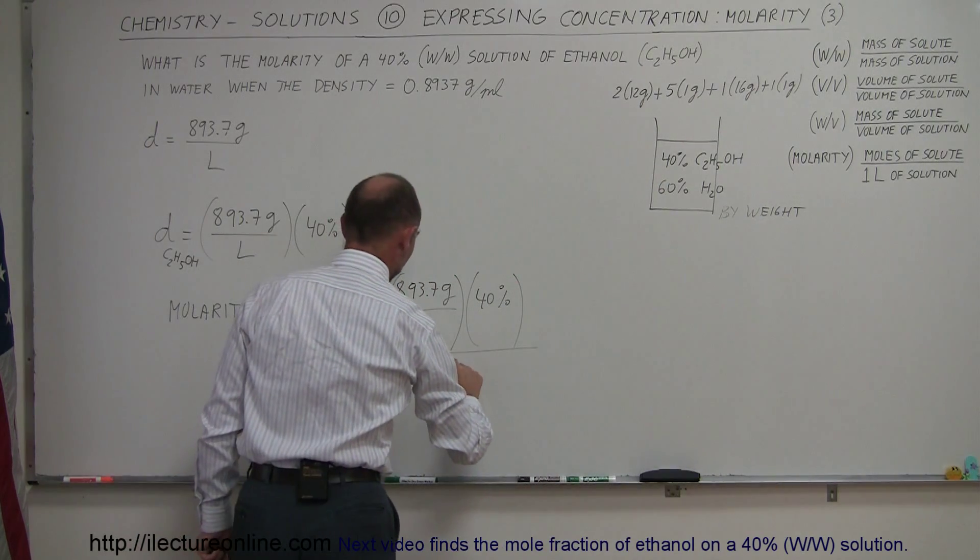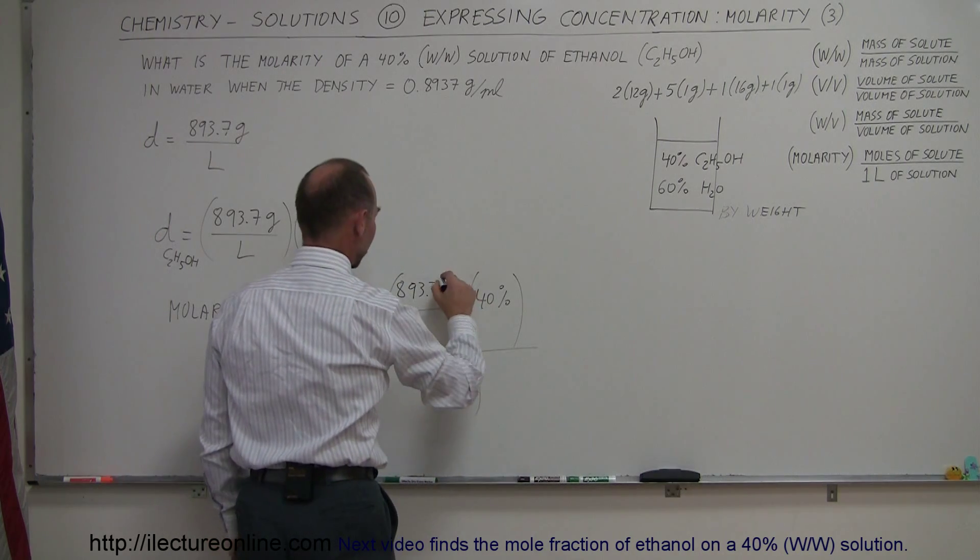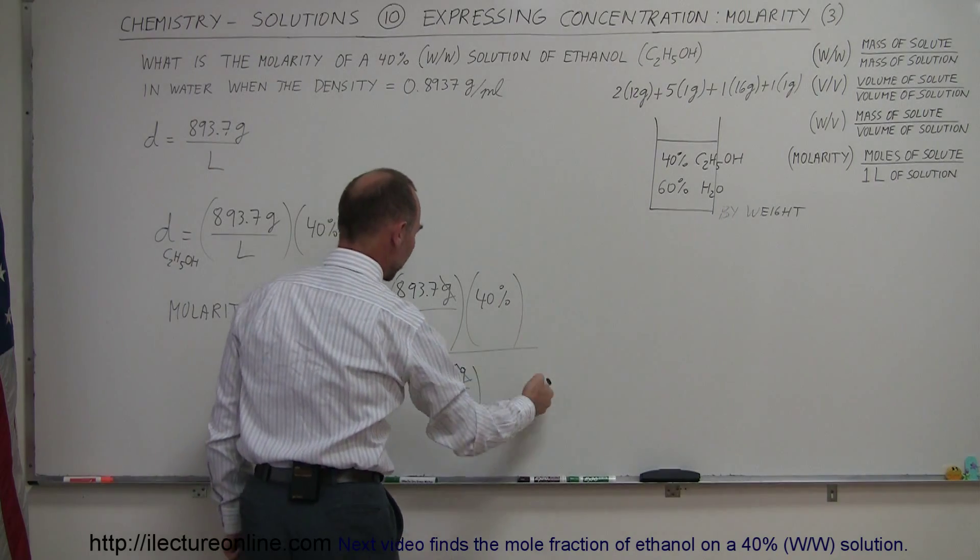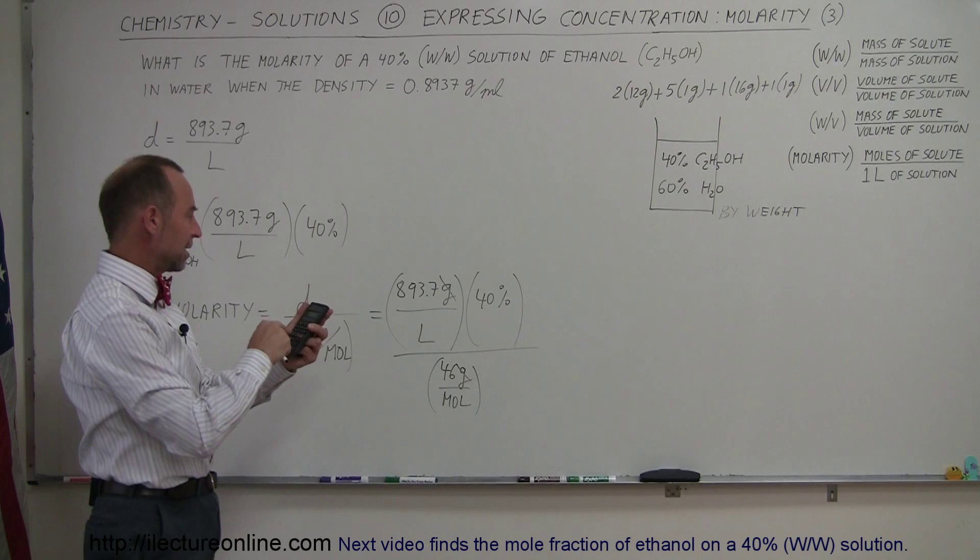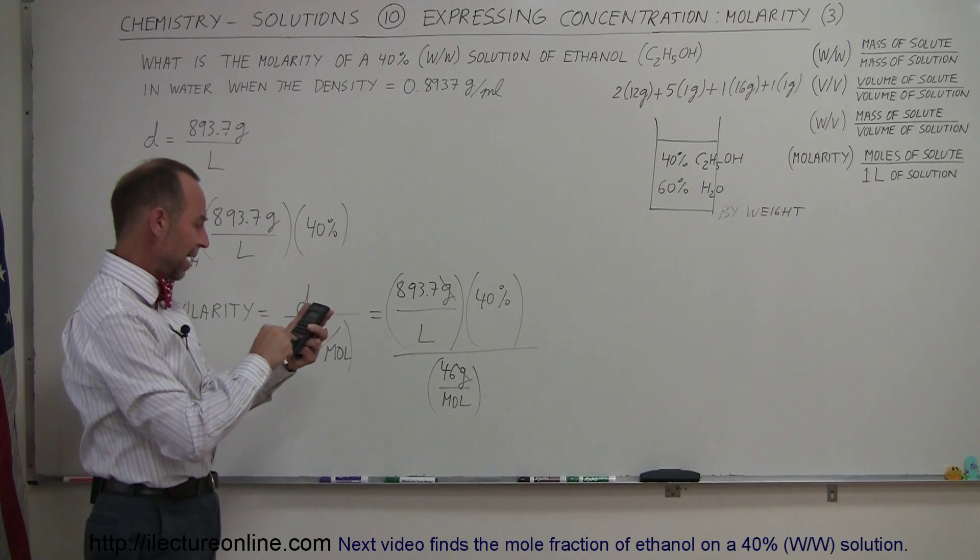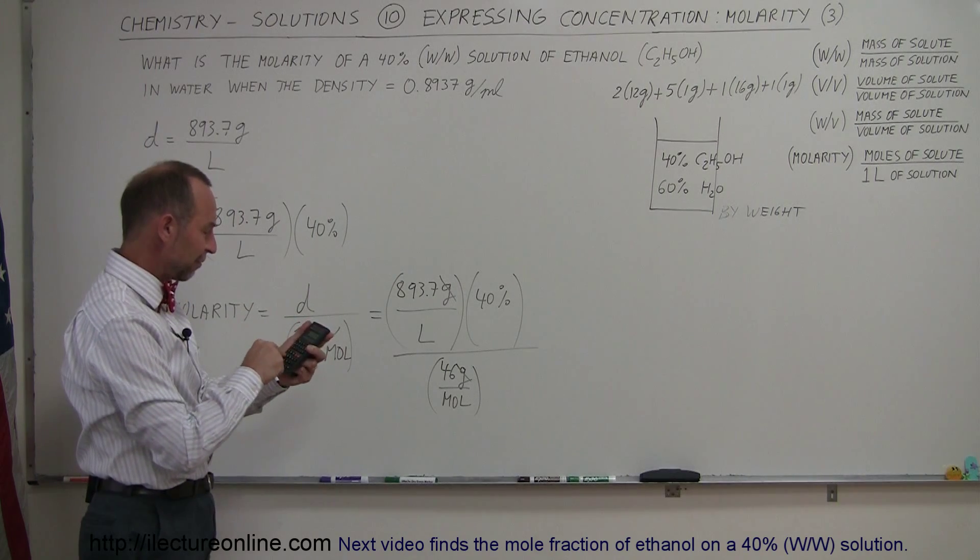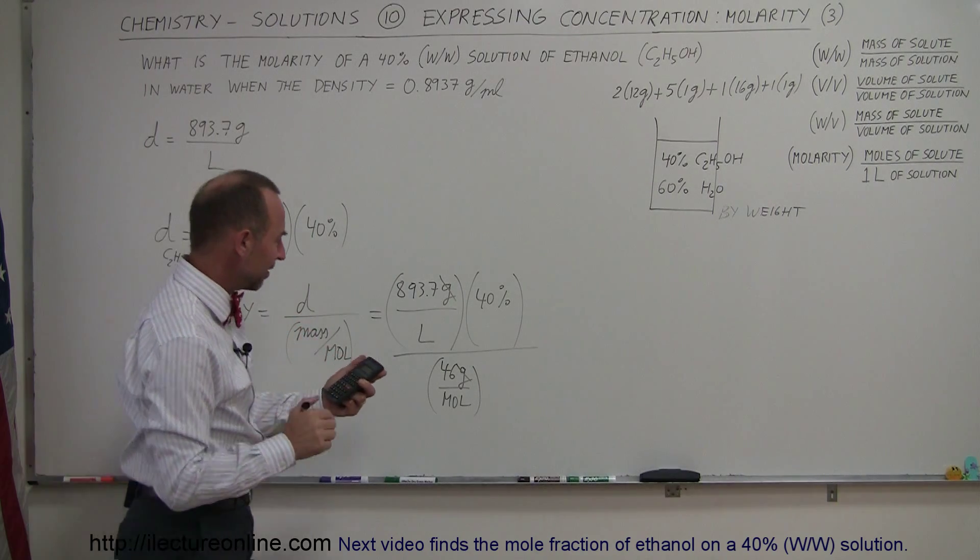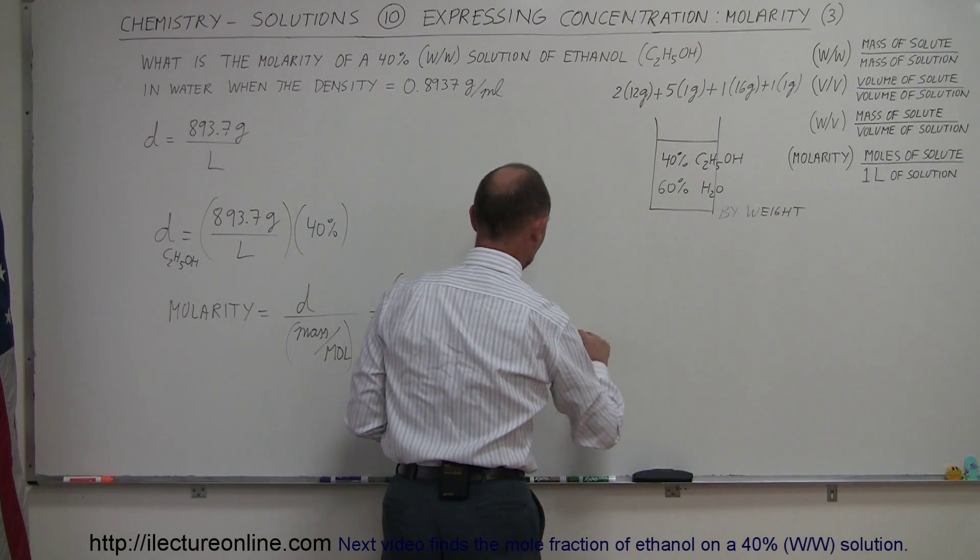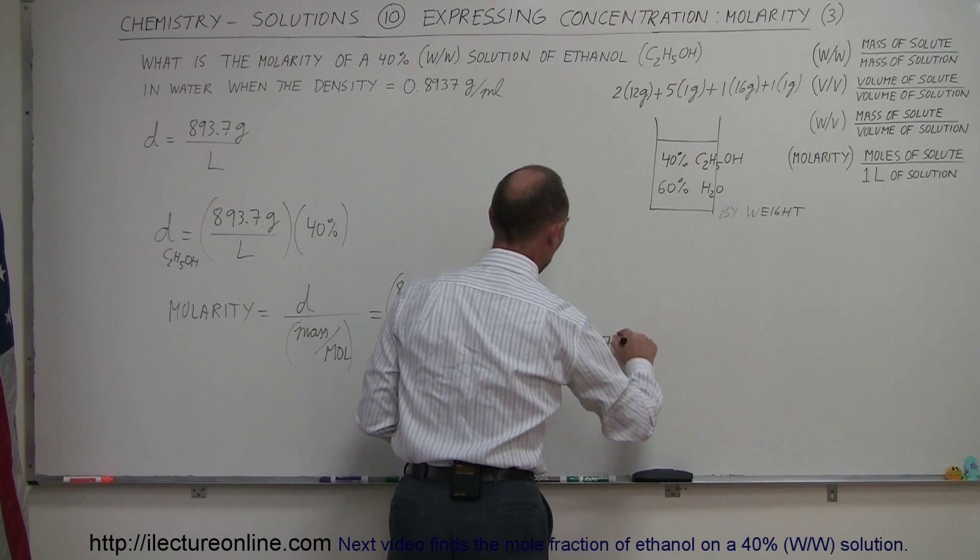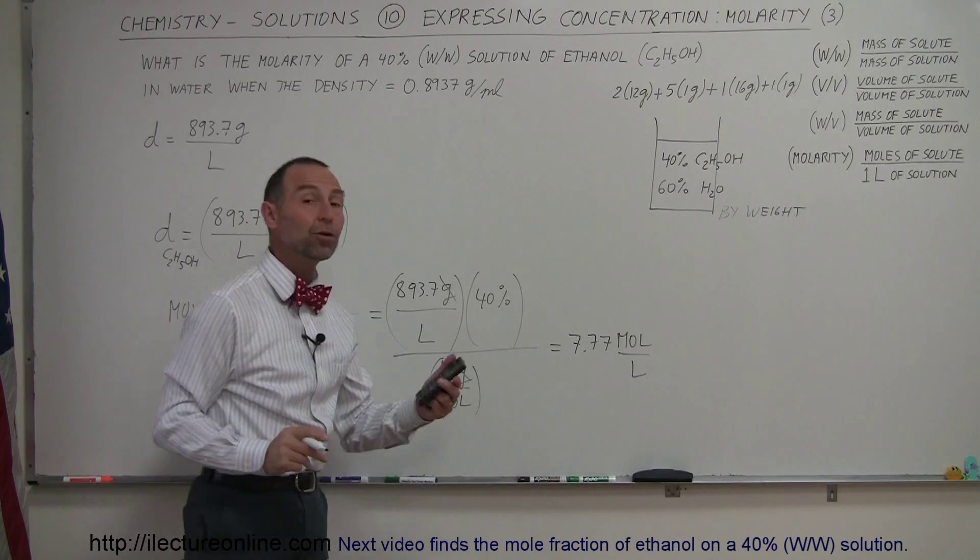So this is divided by 46 grams per mole. Notice that the grams cancel out, we'll end up with moles per liter, and with a calculator we'll be able to figure out what that is. 893.7 times 0.4, because we only have ethanol not the total solution, divided by 46, and we end up with 7.77. Oops, forgot my equal sign. Equals 7.77 moles per liter, and of course that was units of molarity.